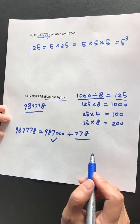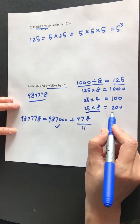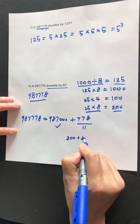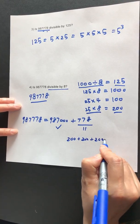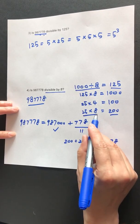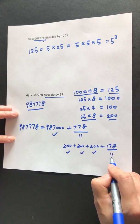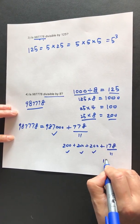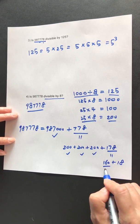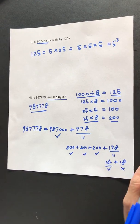Now the question is whether 778 can be divided by 8. We have 200 plus 200 plus 200 plus 178. Every 200 can be divided by 8. The question is whether 178 can be divided by 8. 178 is 160 plus 18. 160 divided by 8 is 20, but 18 cannot be divided by 8, so the total cannot be divided by 8.